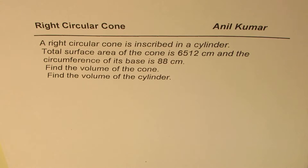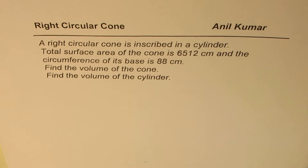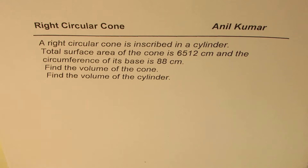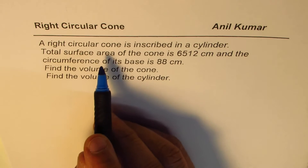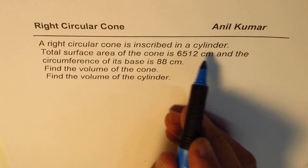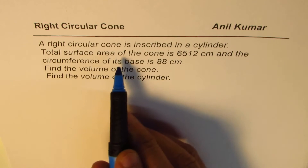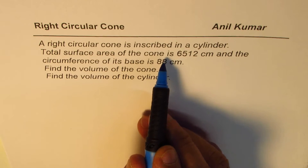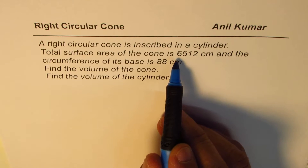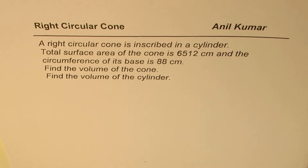I'm Manil Kumar sharing with you a question which has been shared by my subscriber, so let me first thank my subscriber for actively participating and giving me the opportunity to work with such beautiful questions. The question here is: a right circular cone is inscribed in a cylinder. The total surface area of the cone is 6512 centimeters square.